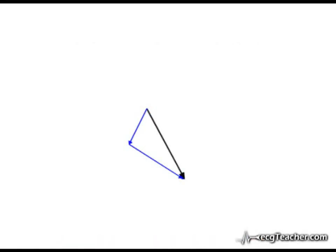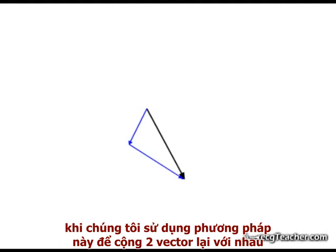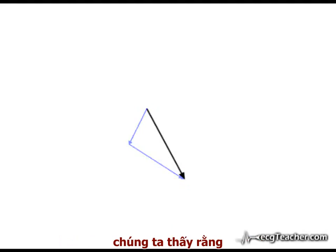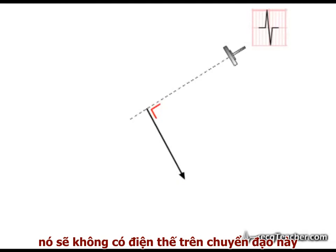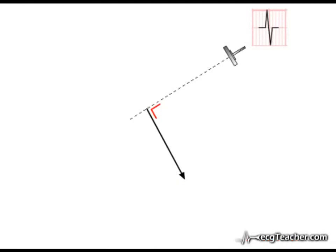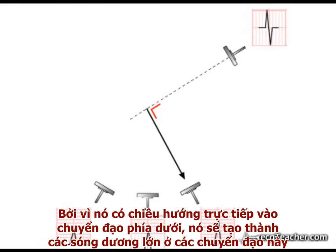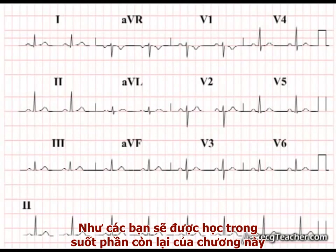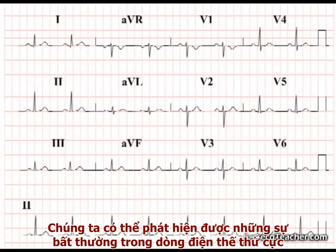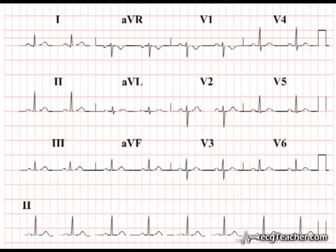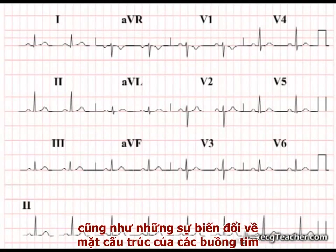In our simple model, when we use this technique to add the two vectors together, we note that the total vector generated is travelling at 90 degrees relative to the isoelectric lead and therefore has no magnitude in its direction, while it is travelling well within 90 degrees of the strongly positive leads. By applying these simple principles to ECG analysis, we can detect alterations in the pattern of flow of depolarization in the ventricles and changes in the structure of the cardiac chambers.